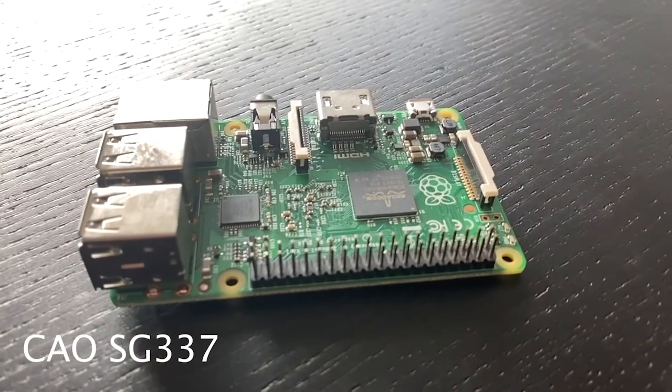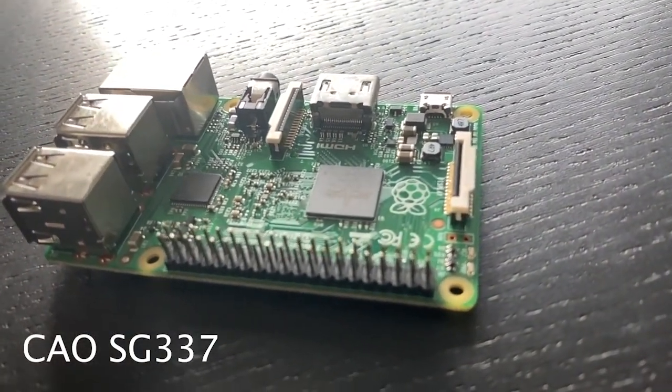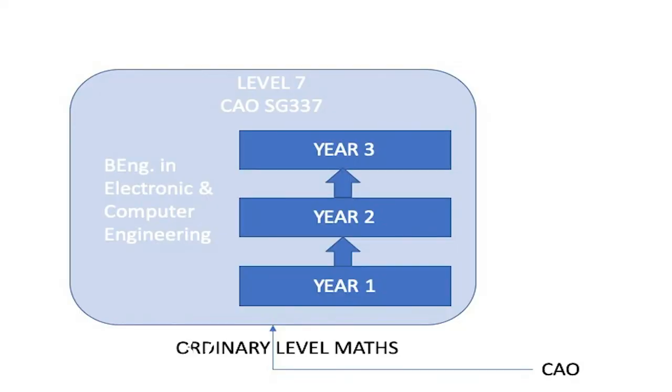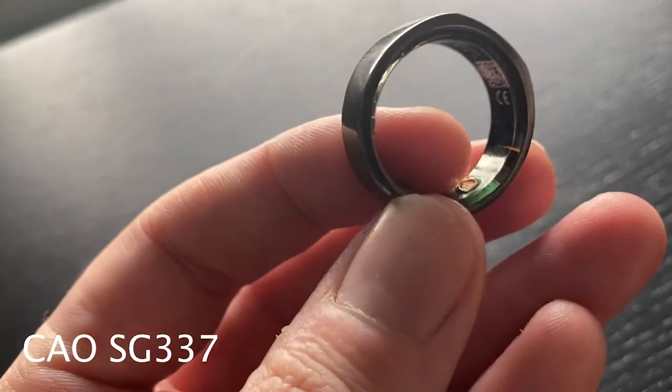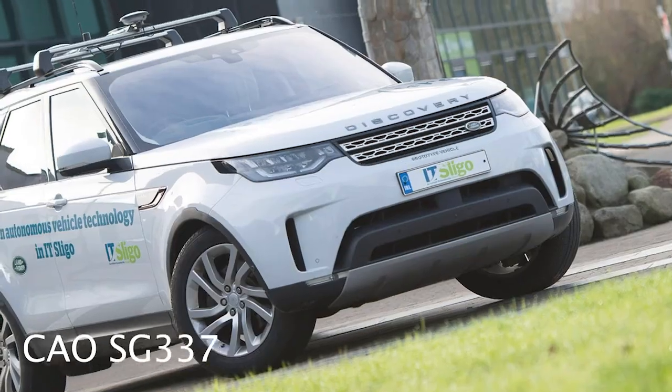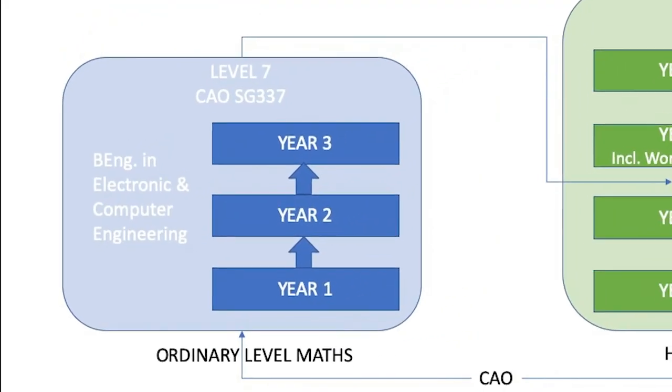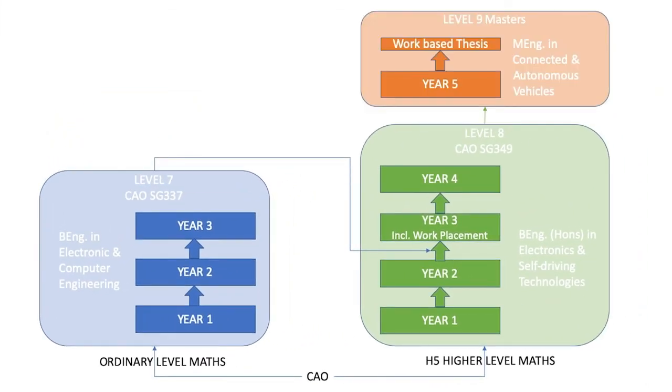If you are interested in technology or engineering but are not doing higher level maths, why not consider our level 7 in electronic and computer engineering? This is a three-year program that looks at the design and development of embedded electronic systems. These are the medical devices that keeps us healthy, the consumer devices that keeps us entertained, or the controlled systems that keeps us safe on the road. You can then progress on to the level 8 in electronics and self-driving technologies and from there to the masters. Check out the link below for more information.